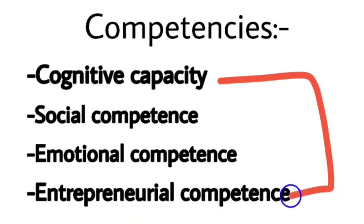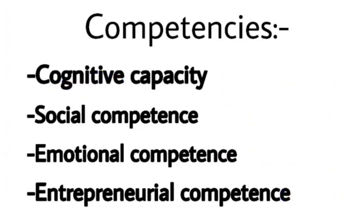So Indian context mein, jo log in sari cheezoin mein intelligent hote hain woh intelligent maane jate hain, baaki cognitive process secondary mein aata hai. Western mein technological intelligence hoti hai - focus cognitive pe hota hai aur woh self-centered hota hai. Aur Indian mein integral intelligence hoti hai - focus cognitive ke alawa social, emotional, aur entrepreneurial pe bhi hota hai, aur woh khud se zyada doosron pe dhyan dete hain.